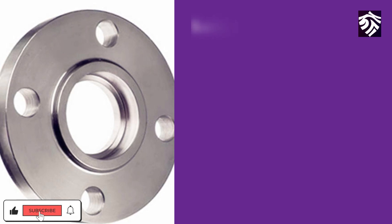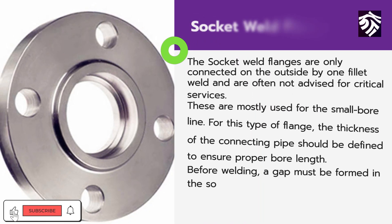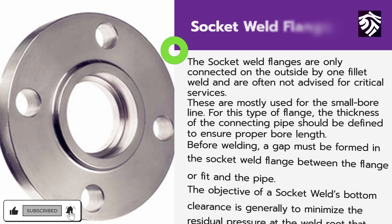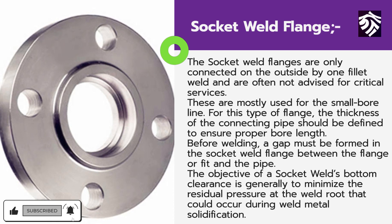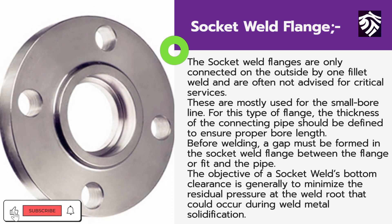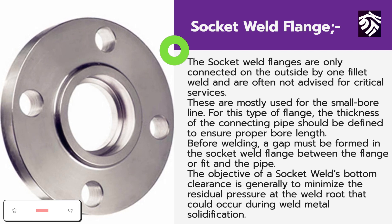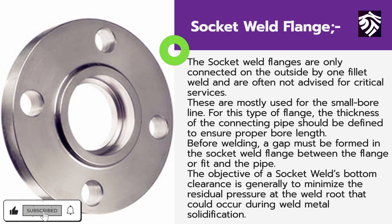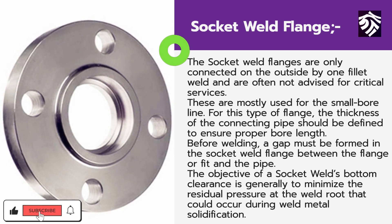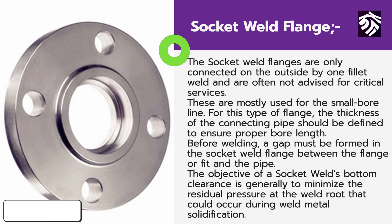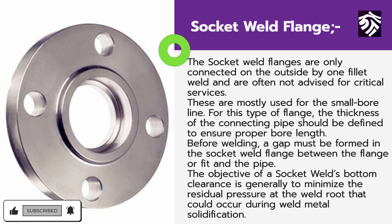Another common type of flange is the socket weld flange. Socket weld flanges are only connected on the outside by one fillet weld and are often not advised for critical services. These are mostly used for small bore lines. For this type of flange, the thickness of the connecting pipe should be defined to ensure proper bore length. Before welding, a gap must be formed in the socket weld flange between the flange and the pipe. The objective of the socket weld bottom clearance is to minimize residual pressure at the weld root that could occur during weld metal solidification.